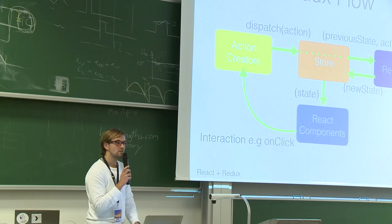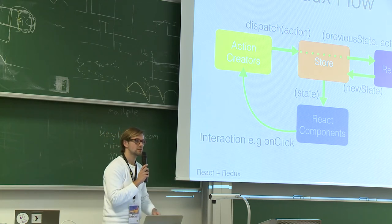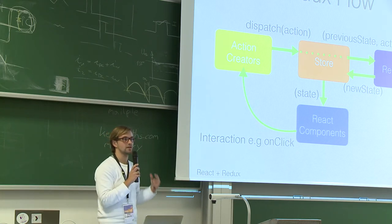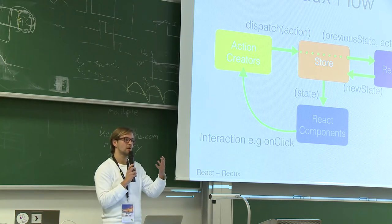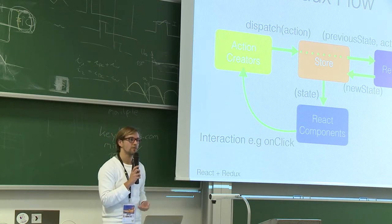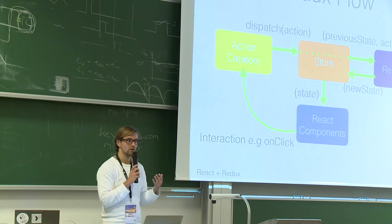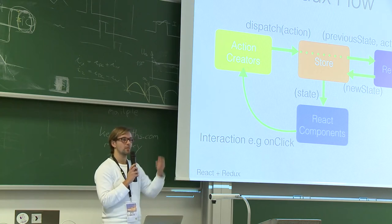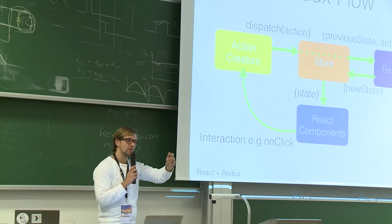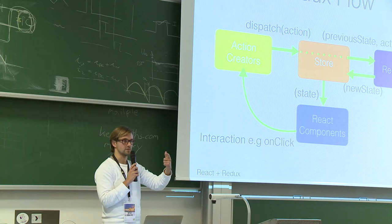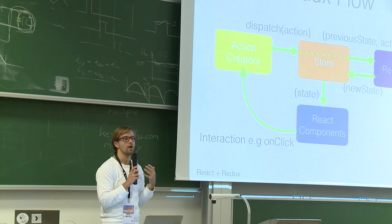When we talk about state in Redux, it's always data. If you have a to-do list application, the state is basically your to-do list. If you have a Facebook profile page, the state might consist of the user, profile picture, name, and a list of news feed items. The state is just any kind of data, however you want to structure it.